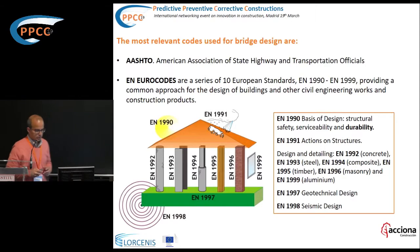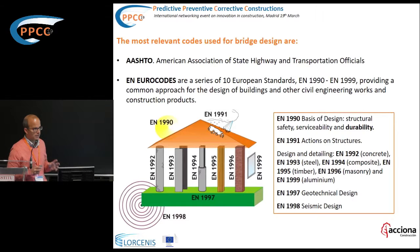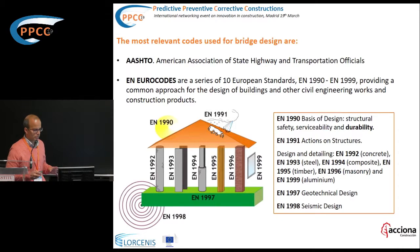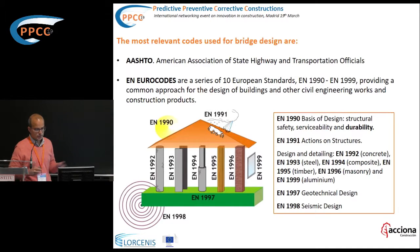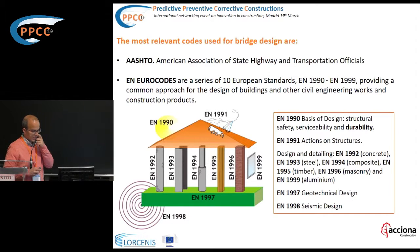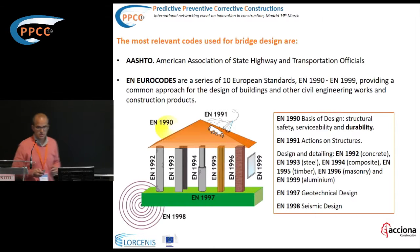There is another general Eurocode, 1991, which covers the actions on structures. Then we have six different pillars, one per each type of material. The most relevant code for this workshop is the 1992, which deals with concrete. The others deal with steel, composite, timber, masonry and aluminium. And there are the last two dealing with geotechnical and seismic issues.